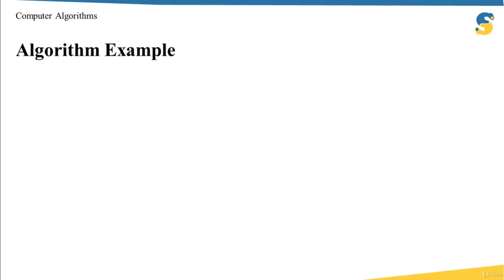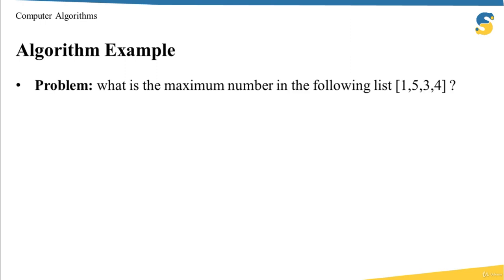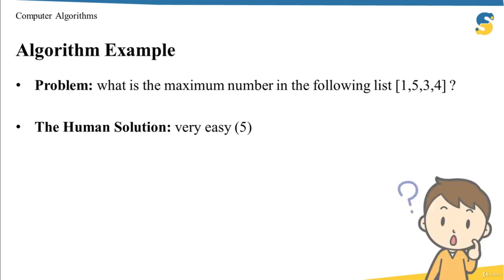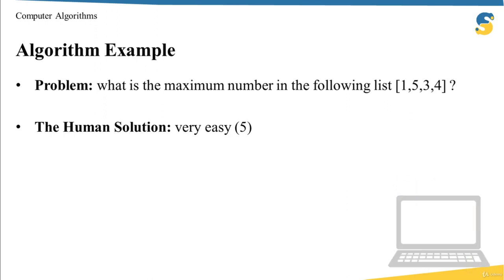To understand the idea better, let's take a complete example. Say you have the following list: 1, 5, 3, 4, and you want to know the maximum number inside this list. As a human you will directly say the maximum number is five, and it's a very easy problem because this list has only four items. But what if this list has one million items? It's very hard to solve directly as a human and you have to use a computer.